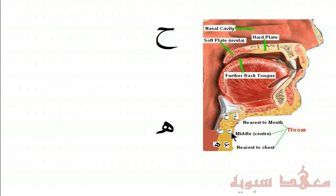As you can see, the letter H, which is a heavy letter, is in the middle of the throat, while HA is at the bottom, more towards the chest area.